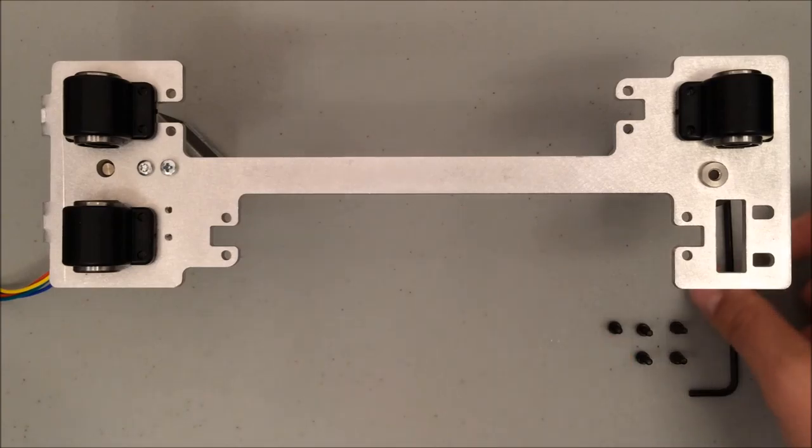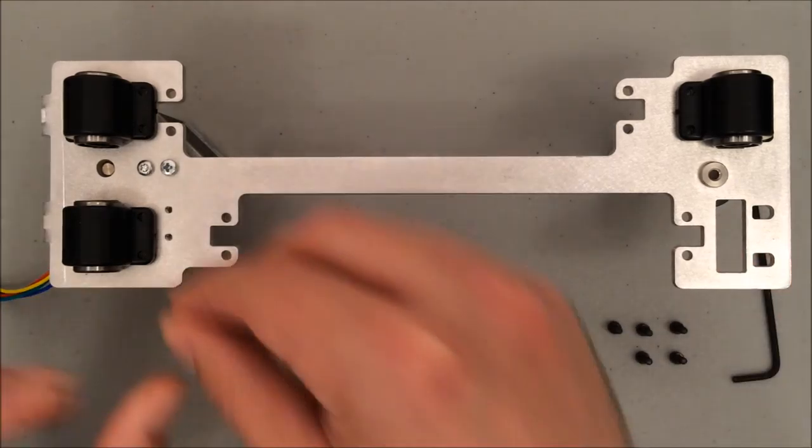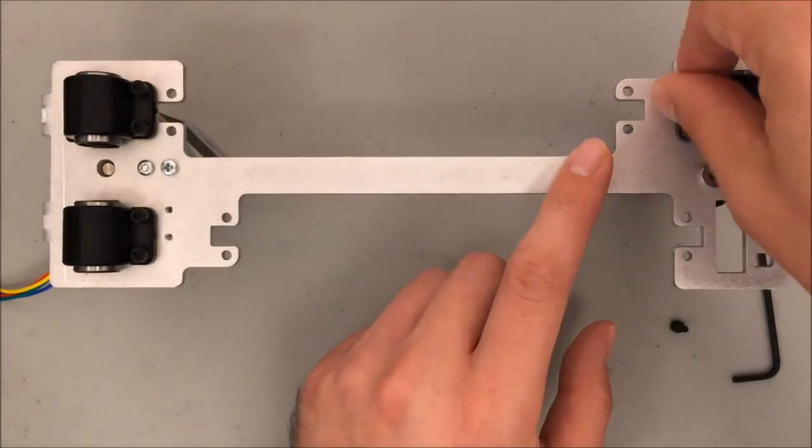Then you'll attach two M3 8mm screws to each bearing clamp. Make sure they're firm when you tighten them in place with the Allen wrench.